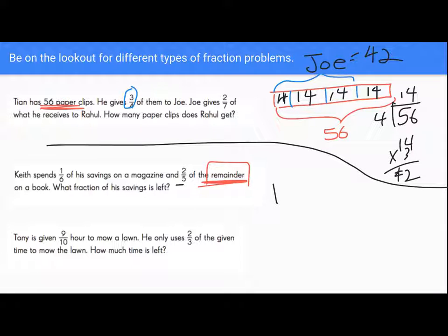So for this bar model, I know that Keith spent one-sixth of his savings on a magazine. So if I divide my bar into sixths, I should annotate that, one-sixth is really important. One-sixth is right here. And I know that he spent it on a magazine, so I'm going to put an M above the one-sixth. But guess what? He spent two-fifths of the remainder.